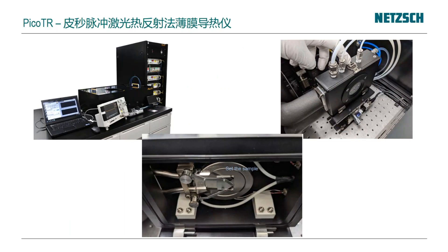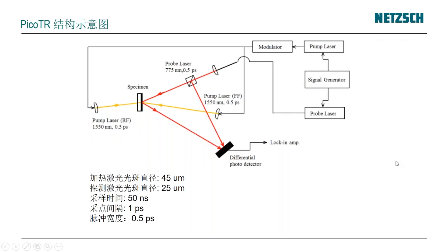我们还有一款仪器针对更薄的薄膜，叫PicoT2，就是皮秒脉冲激光热反射法薄膜导热仪。它的结构相对更复杂一点，左边是主机，右边是一些控制器。PicoT2是侧置式的，将薄膜样品夹在加热盘上然后盖上盖子，加热激光和检测激光分别在加热盘两侧。PicoT2的整体构造和基本原理跟NanoT2基本一致，只是因为PicoT2的脉冲宽度包括采点间隔能做到更小，所以它能够测试更薄的样品。